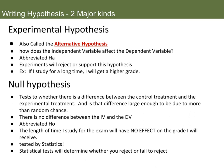Because we are doing stats in a lot of our labs and experiments, we're also going to have a null hypothesis. A null hypothesis tests whether there's a difference between the control and the experimental treatment — is the experiment even valid? A null hypothesis asks if any difference is large enough to be due to more than just random chance. Basically, a null hypothesis states that there is no difference between your independent variable and your dependent variable. The null hypothesis is abbreviated H-O. For example: the length of time I study for the exam will have no effect on the grade I will receive. Statistical tests will determine whether you reject or fail to reject your null hypothesis.